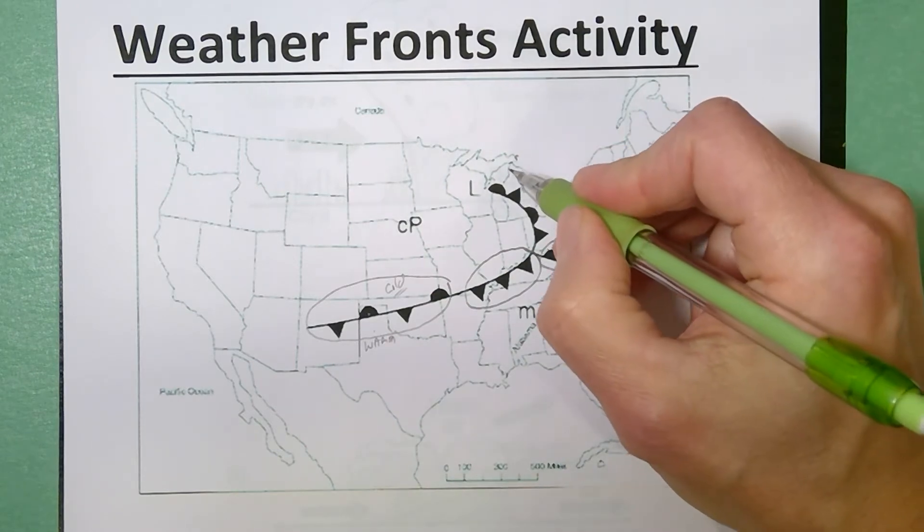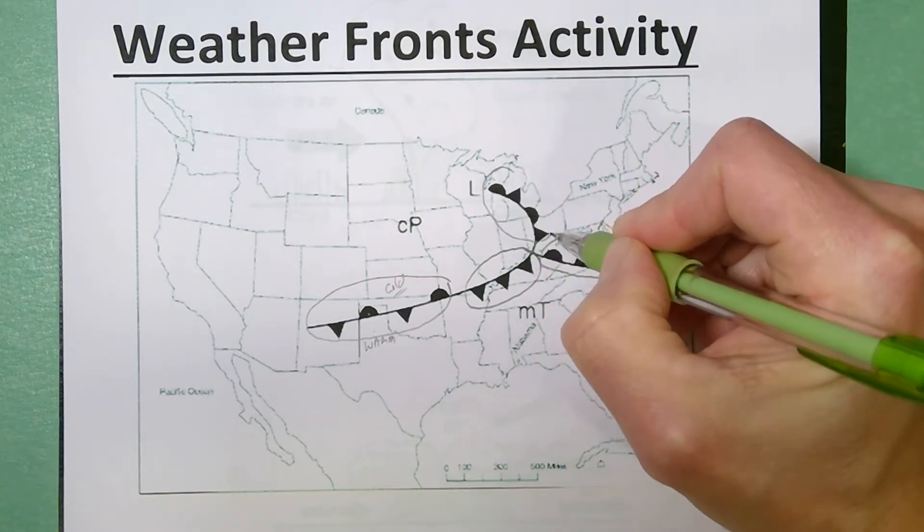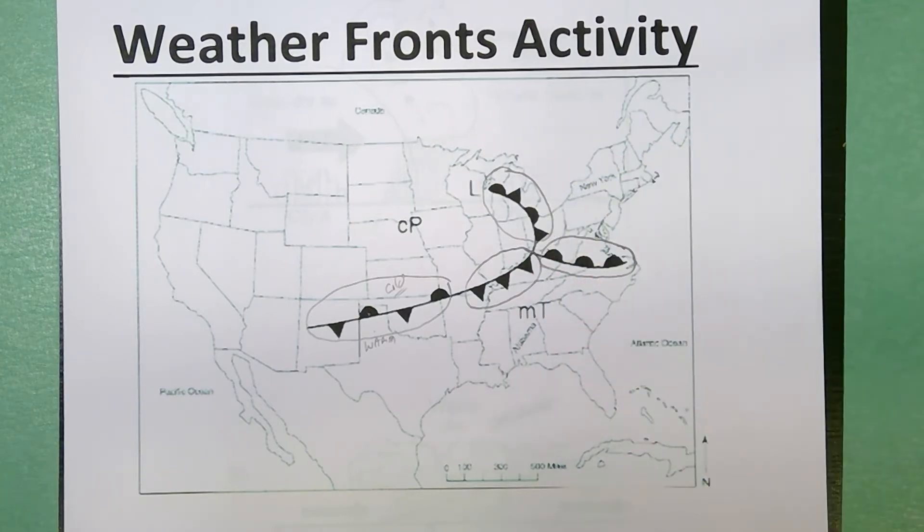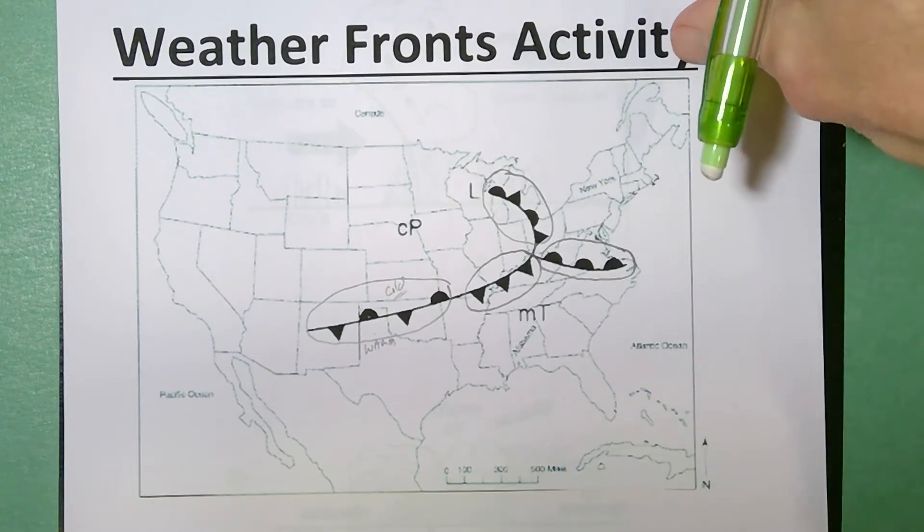Now the fourth type of front is illustrated right here. That would be an occluded front and we'll go over the process of occlusions in a minute when we look at some cross-sectional diagrams of this.